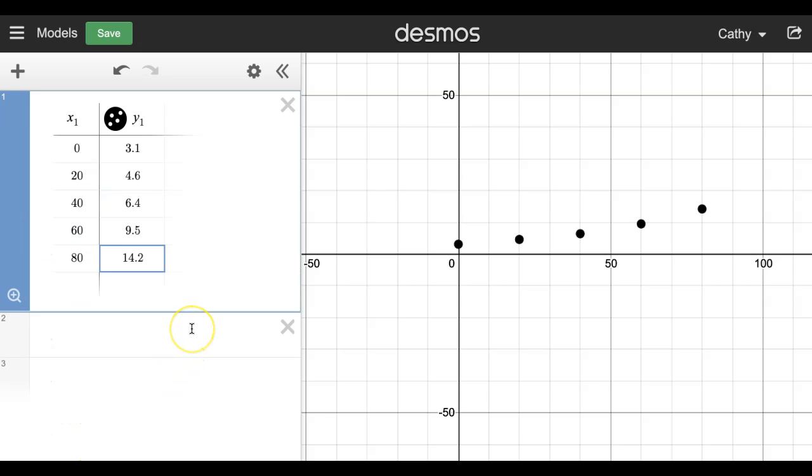So I've got all my data entered. I'm going to double check and make sure it's correct. It looks right and I can see that Desmos has plotted it for me and I think maybe that's a line.